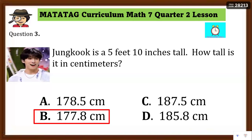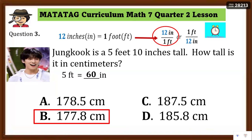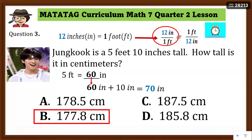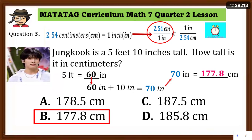The answer is 177.8 centimeters. Si Jungkook, one of the members of BTS, ay may taas na 5 feet 10 inches — gaano siya kataas sa centimeters? Use the unit fraction 12 inches over 1 foot: 5 times 12 equals 60 inches. Since may 10 inches pa siya, 60 inches plus 10 inches equals 70 inches. Then convert to centimeters using 2.54 cm over 1 inch: 70 times 2.54 equals 177.8 centimeters.